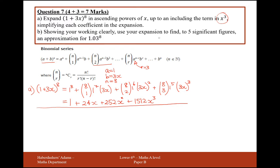For part B, showing your working clearly, use your expansion to find to 5 significant figures the approximation of 1.03 to the power of 8. What we've got is 1 plus 3x to the 8 equaling 1.03 to the power of 8, so the powers of 8 cancel. Taking away 1 from both sides gives 3x equals 0.03, and dividing through by 3 gives x equals 0.01.